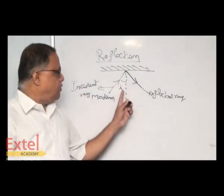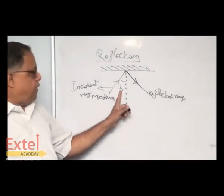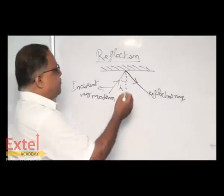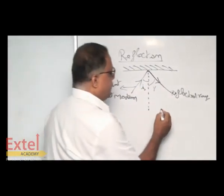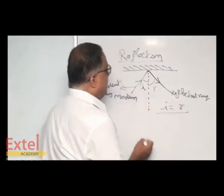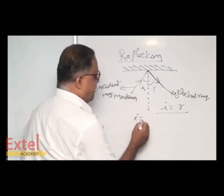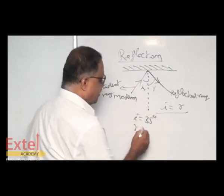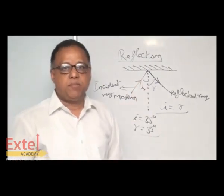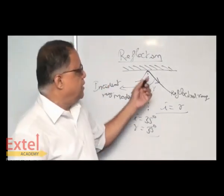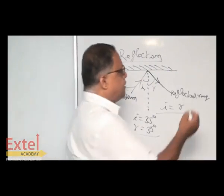For reflection, we have to calculate the angle of incidence only with the normal and angle of reflection only with the normal. Here I is equal to R, a very important condition. If we take 35 degrees as the angle of incidence, R is also 35 degrees. This is the advantage of the plane mirror. We are going to discuss three types of mirrors.